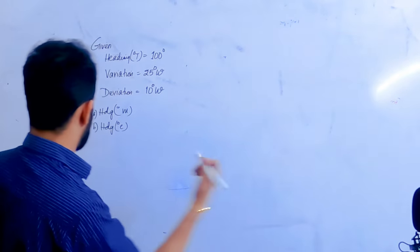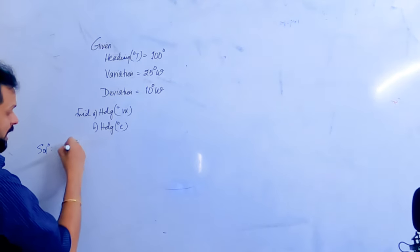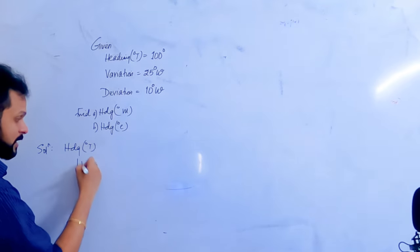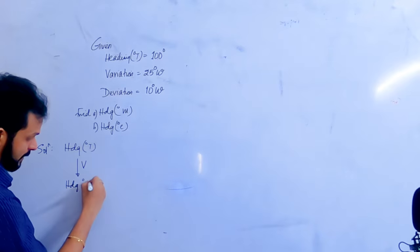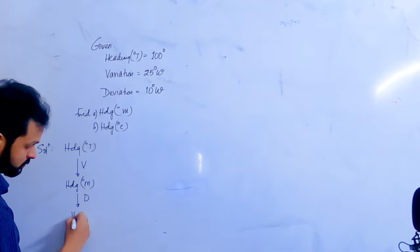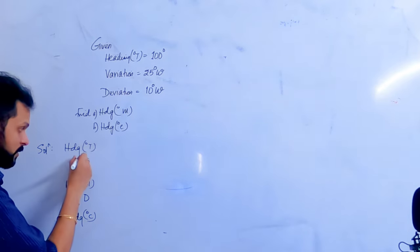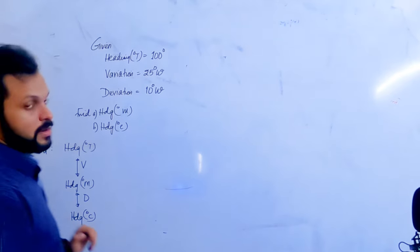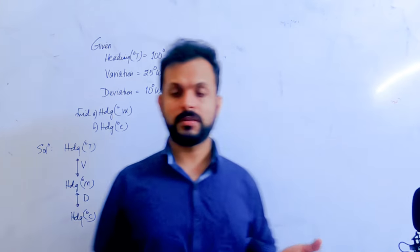Here's a basic flow: if you have True Heading, apply variation and you get Magnetic Heading. Then apply deviation and you get Compass Heading. It works the other way around as well — if you have Compass Heading, apply deviation to get Magnetic Heading, then apply variation to get True Heading.